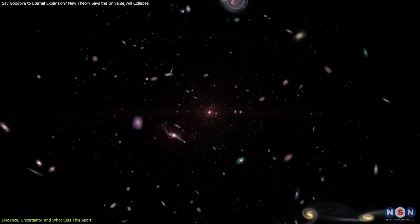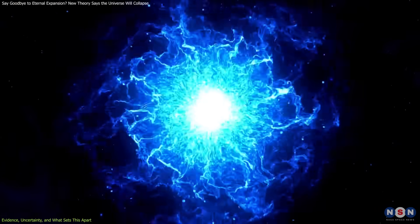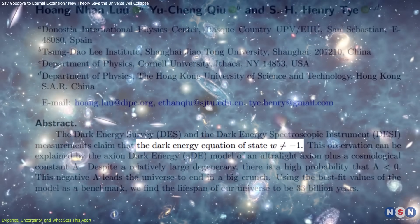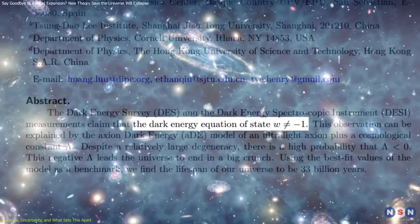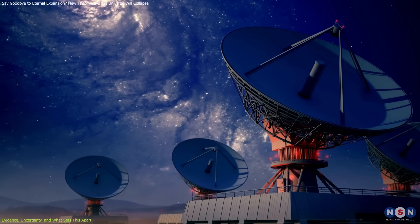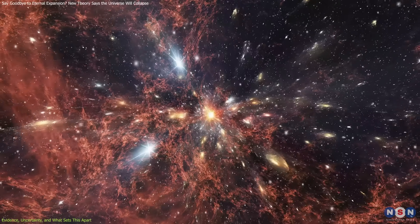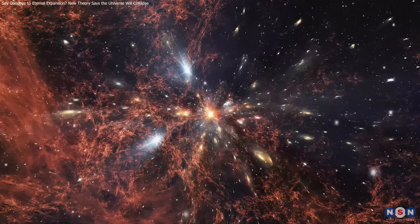That said, the model is still speculative. There's no direct evidence for axions, nor has a negative cosmological constant been observed. And while the equation of state hints at evolving dark energy, the statistical confidence is not yet strong enough to make it conclusive. The authors don't claim this is the universe's fate, only a possibility if dark energy evolves and the cosmos allows it. The key is testability. Future observations will refine our understanding. If data supports W greater than -1, the collapse scenario gains traction. If not, it weakens.